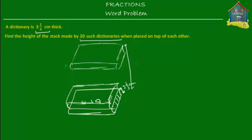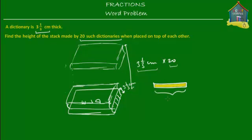It's quite simple — the height of this stack would be 3 and 1/3 centimeters times 20, because each dictionary has a thickness of 3 and 1/3 centimeters and there are 20 of those. So the total height of the stack would be 3 and 1/3 centimeters times 20. If you want to show it using a model, you have a model for the thickness of the dictionary — 3 and 1/3 centimeters — and all you do is multiply this model 20 times to find out the total height.